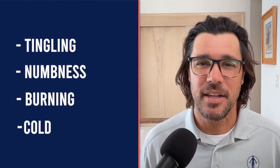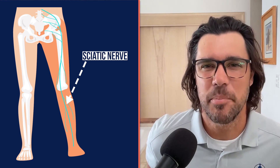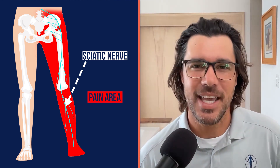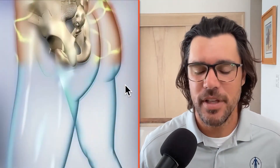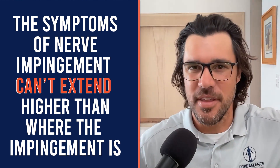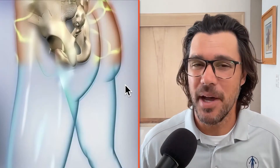The feeling of sciatica is electrical type feelings. It can be tingling, numbness, burning, or even cold. It has a very wide range of symptoms. It's commonly in your buttocks, back of your thigh, back of your knee, down your calf, even into the foot. There's really no limit to how far it can go down your leg. The only thing that definitely can't happen is symptoms can't go higher than where the impingement is. If the impingement is in your buttocks, symptoms could go all the way down into your foot, but not up into your back, neck, or shoulders.